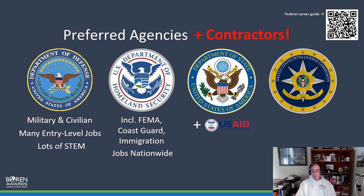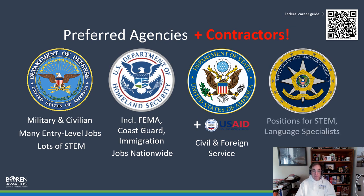The State Department — we get a lot of folks interested in being a foreign service officer, and it's definitely a big part of the program, although there is a civil service as well. USAID falls under that Department of State umbrella, and USAID has their own foreign service as well. If you're looking at the intelligence community, there are lots of opportunities for STEM, language specialists, and PhD-required positions. So those of you applying for the fellowship in a PhD program would benefit from this as well.